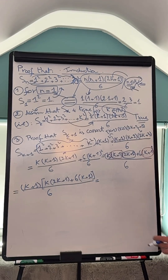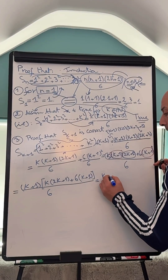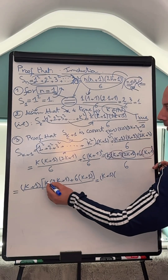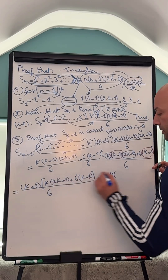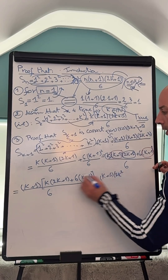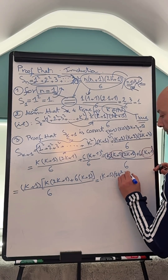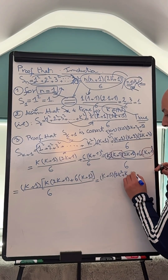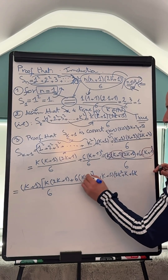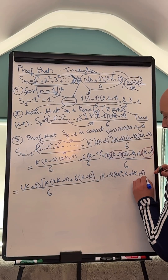We have to simplify it again, which is going to be k plus 1, divided by: k times 2k is 2k squared, k times 1 is plus k, 6 times k is 6k, 6 times 1 is 6, all divided by 6.